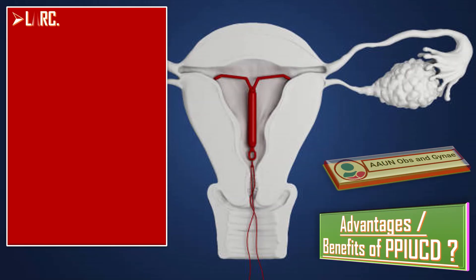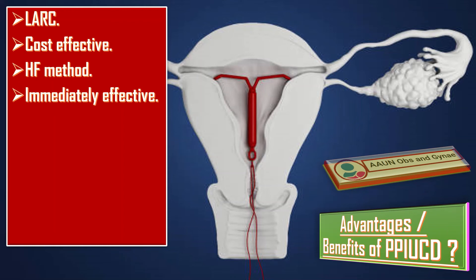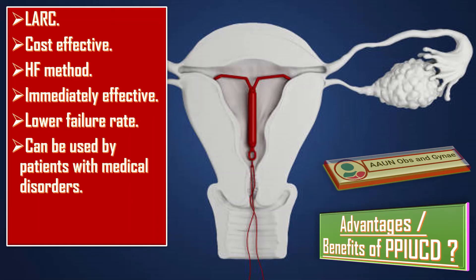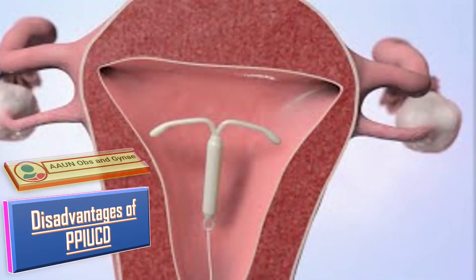Advantages and benefits of PP-IUCD: it is a long-acting reversible contraceptive method, a cost-effective and hormone-free method of contraception. It is immediately effective, has a lower failure rate, can be used by patients with medical disorders, and requires no daily compliance.